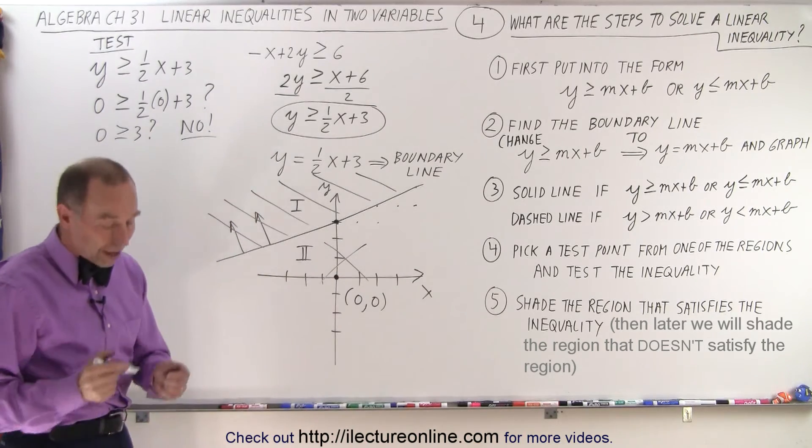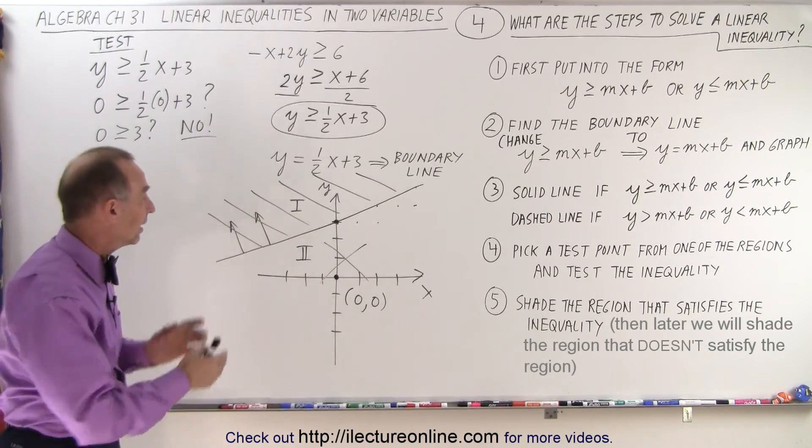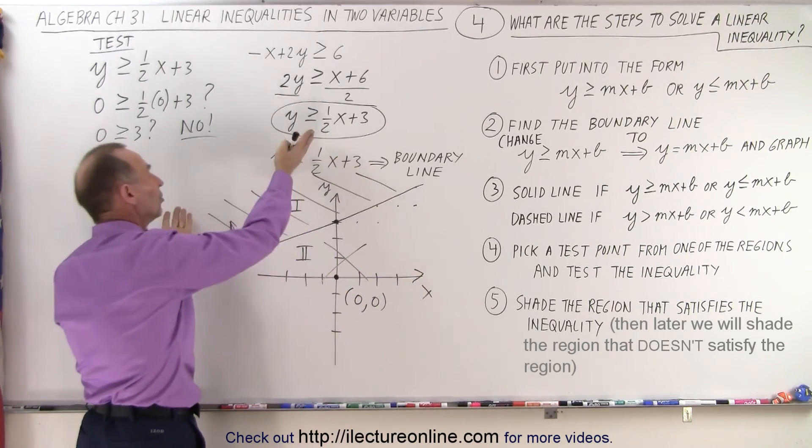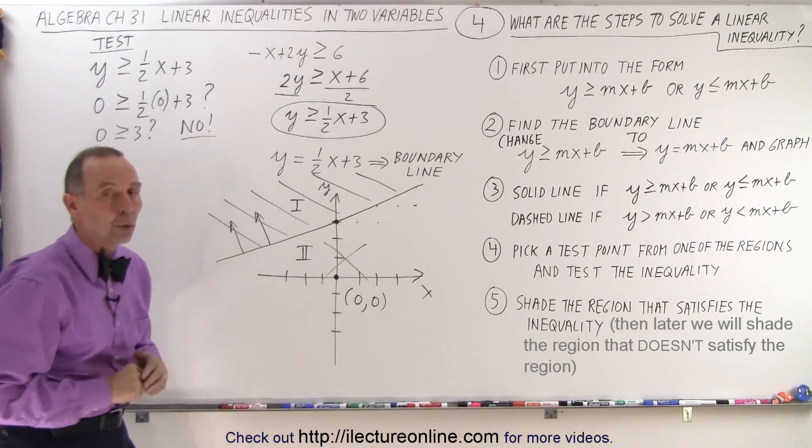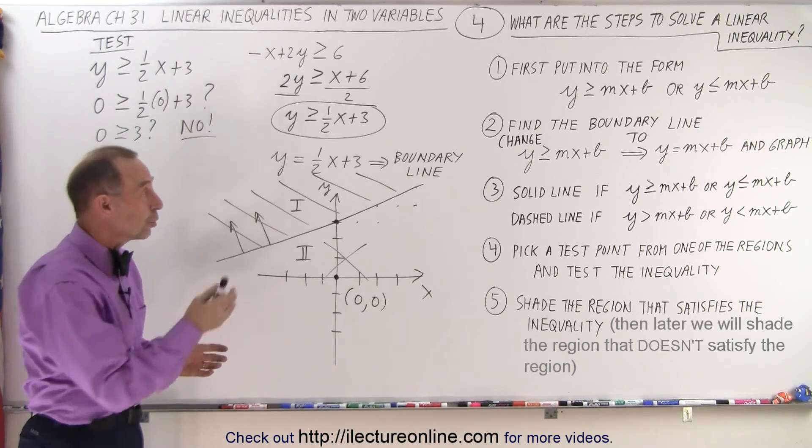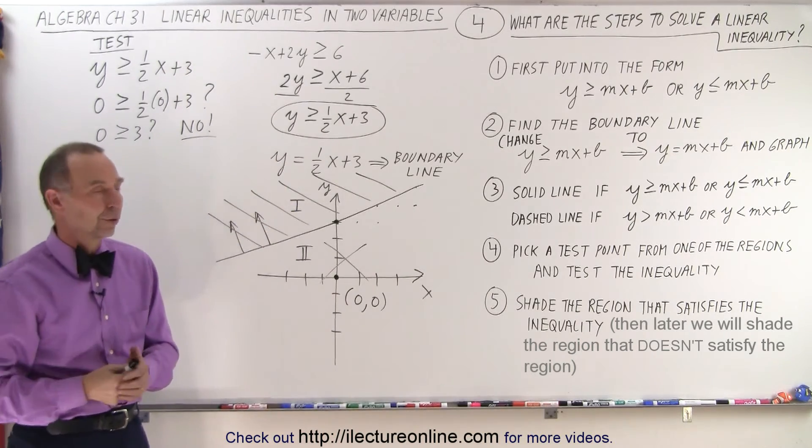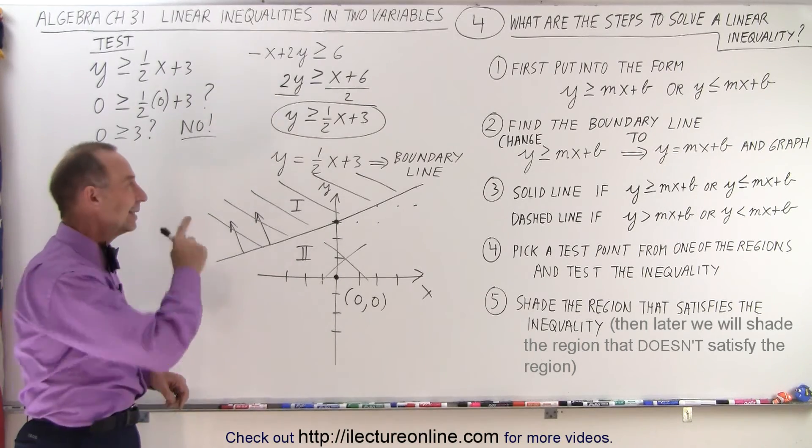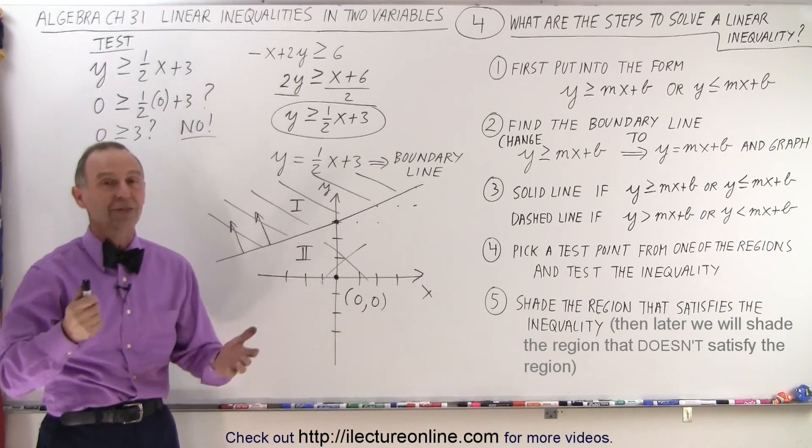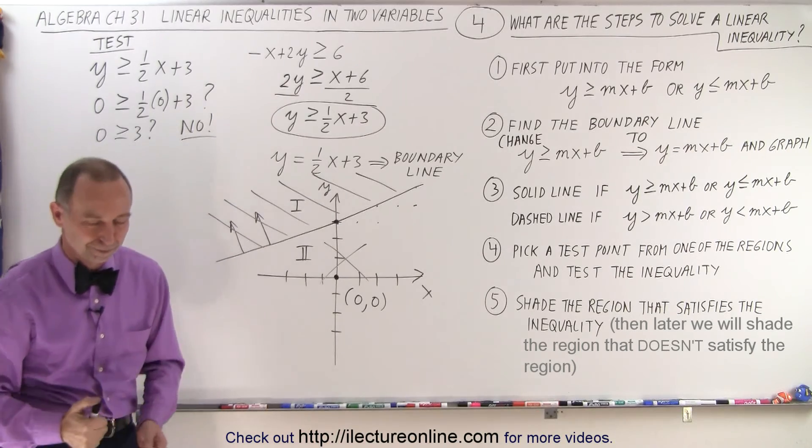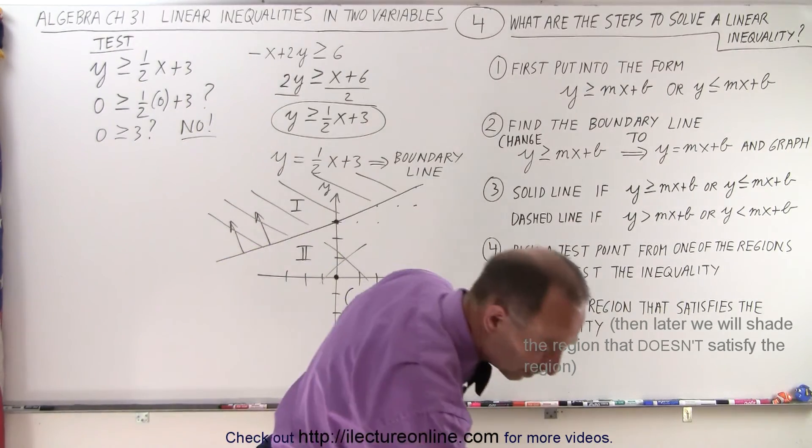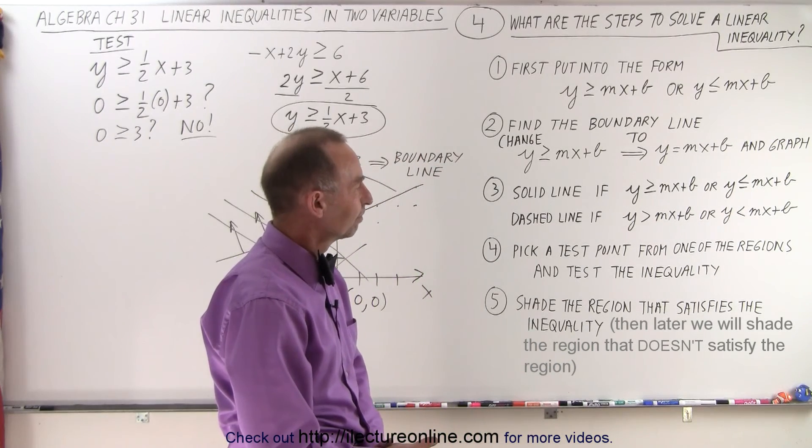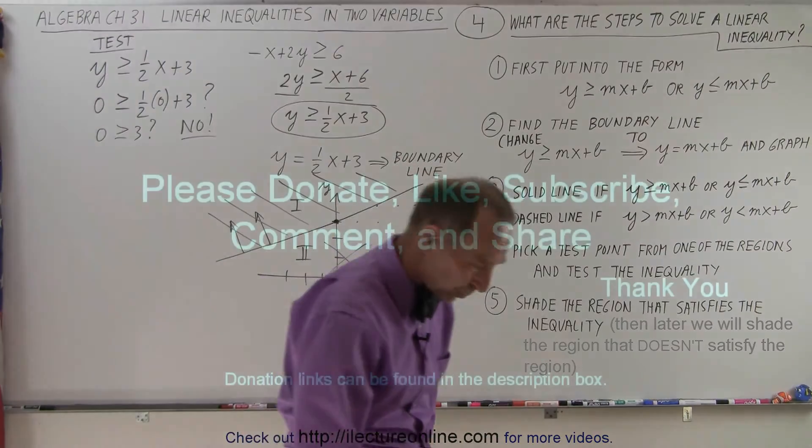So point number five, shade the region that satisfies inequality, just like we did over here, which means this one does not, and this region does satisfy the inequality. And so that's how you go through those five steps to find the solution, or the region, or all the points in the region satisfy the inequality. And that is how it's done. Okay, that's good. What's next?